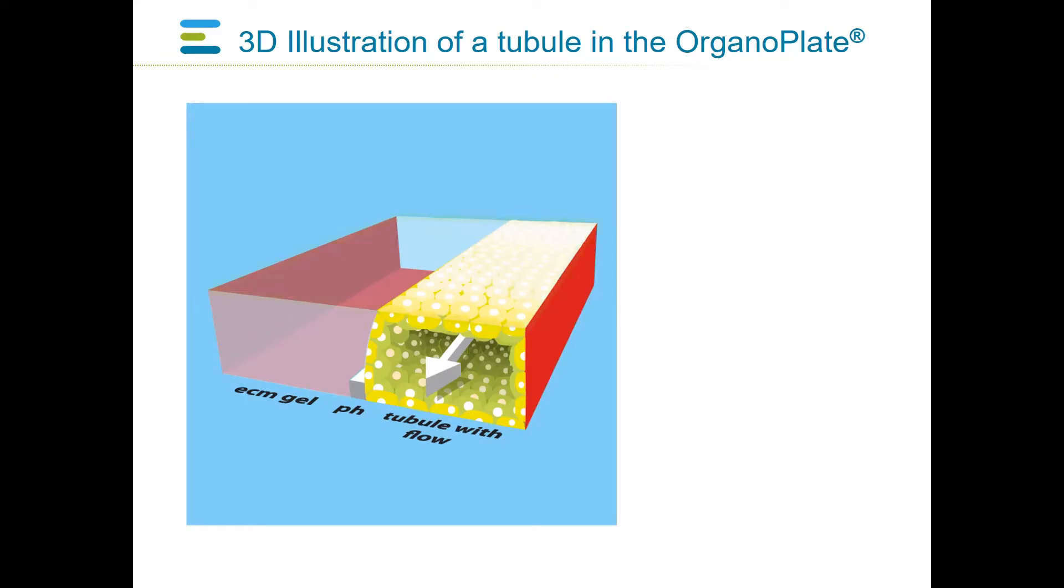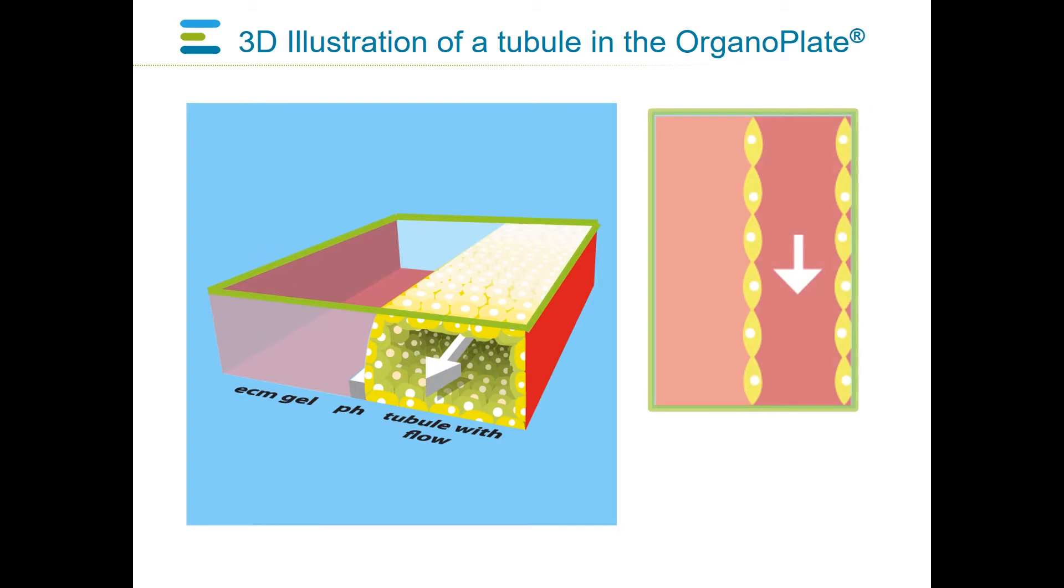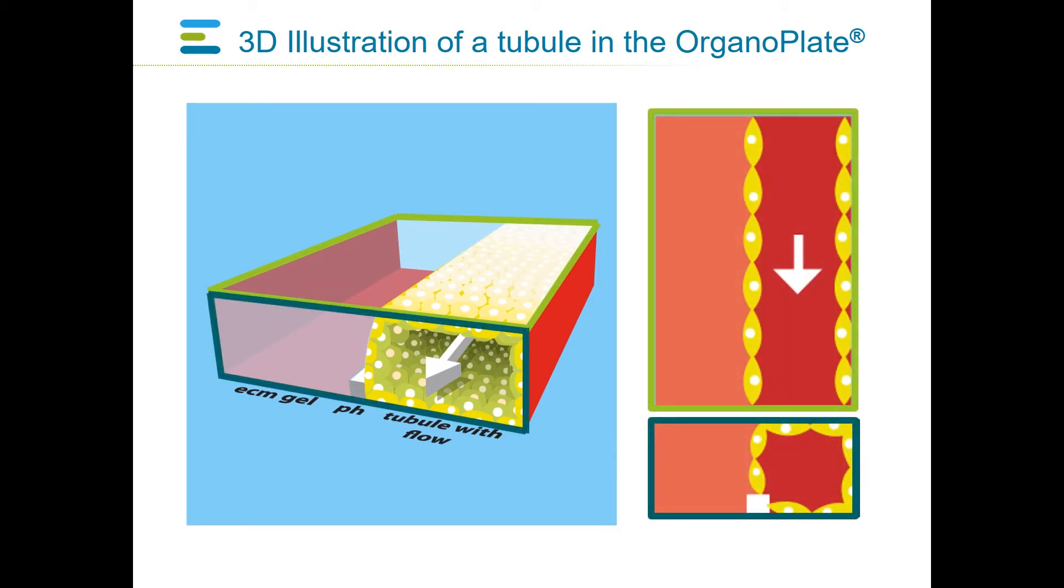The formed tubules line the entire perfusion channel located adjacent to the ECM. Please note that the phase guide used to pattern the ECM is only a low ridge along the microfluidic channel and does not constitute a physical barrier between the gel and the tubules. This allows free communication and transport of compounds across the interface between gel and tubules. The tubule is connected to the perfusion inlet and outlet to allow for perfusion through the lumen of the tubule.